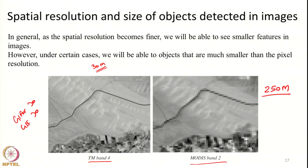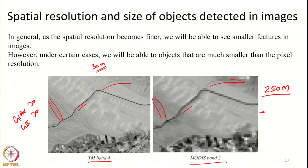Look at these two images. Though the MODIS image appears much more pixelated, we are still able to see certain features — this road is clearly visible in the Landsat image and also visible to some extent in the MODIS image. Though we are not able to clearly distinguish details, we still have some signal. This road and another linear feature, most likely a canal, are visible clearly. The road size is definitely not 250 meters — it may not even be 30 meters in width — but it is still visible.